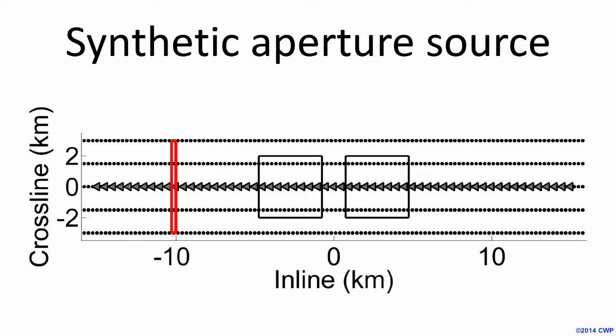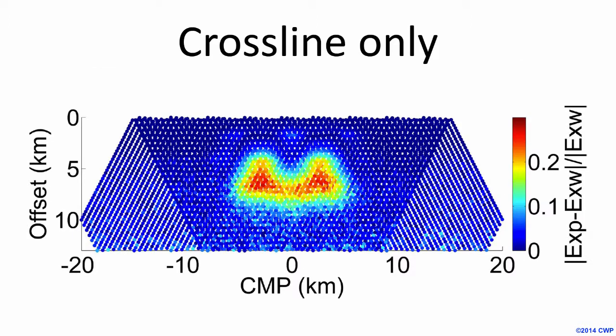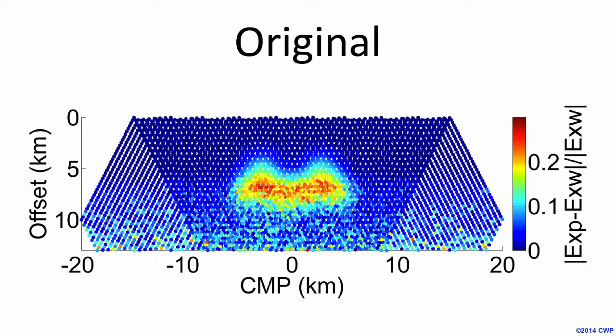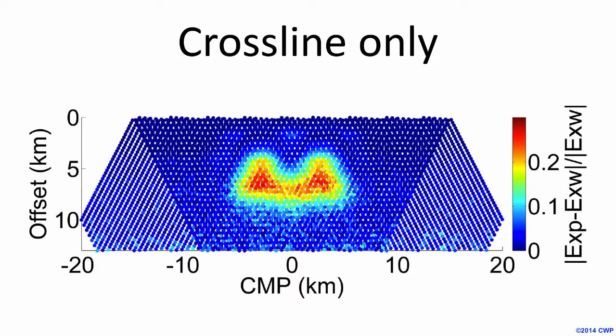We go through the same process of determining the optimal weights and then applying those to the image. This is the result of crossline-only synthetic aperture. Comparing to the original data, we've again increased the magnitude of the anomaly and reduced the noise. But more importantly, we've been able to differentiate those two anomalies much better.